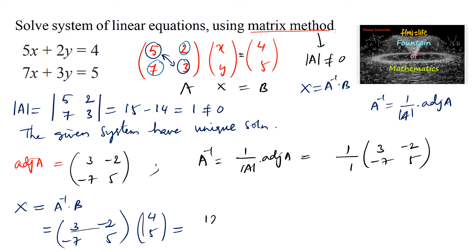This equals 3 times 4 minus 2 times 5 is minus 10, and minus 7 times 4 is minus 28, and 5 times 5 is plus 25, which equals 12 minus 10 is 2, and 25 minus 28 is negative 3.